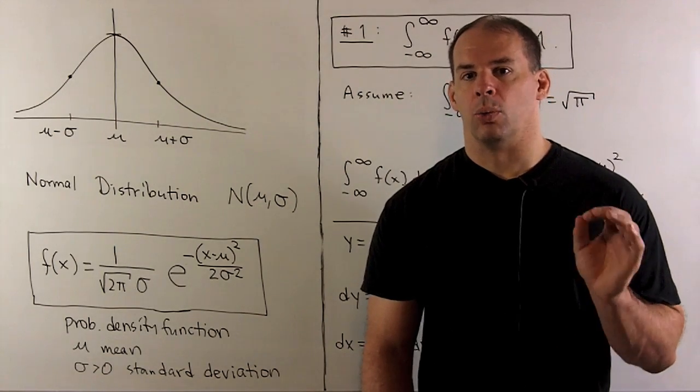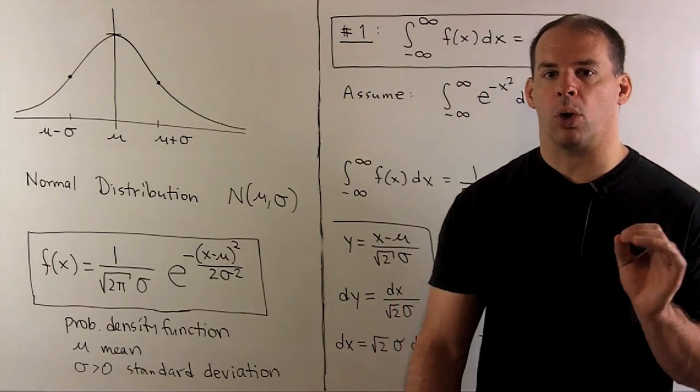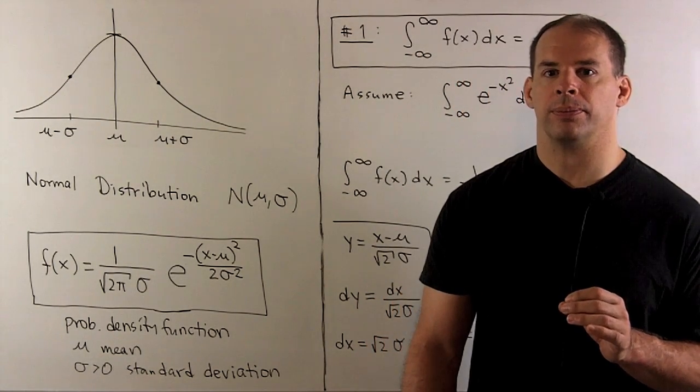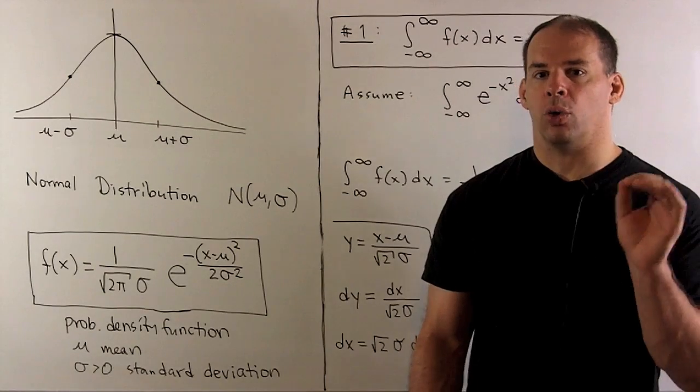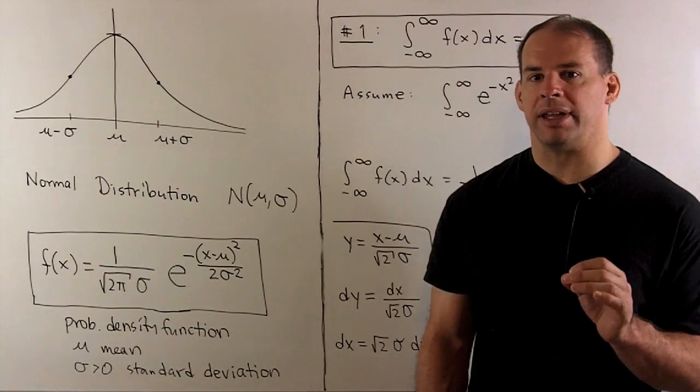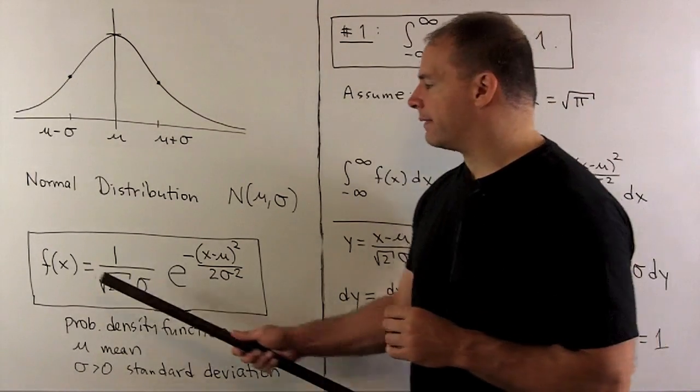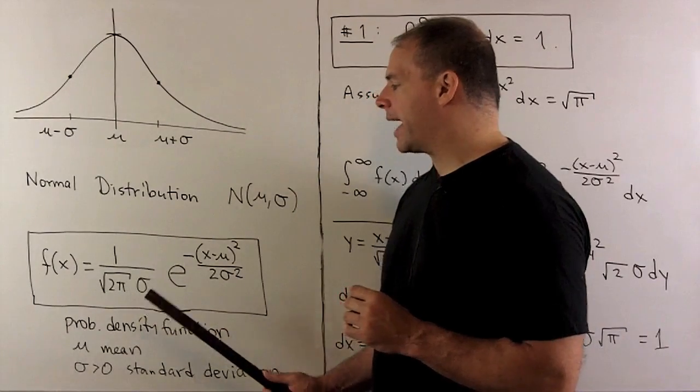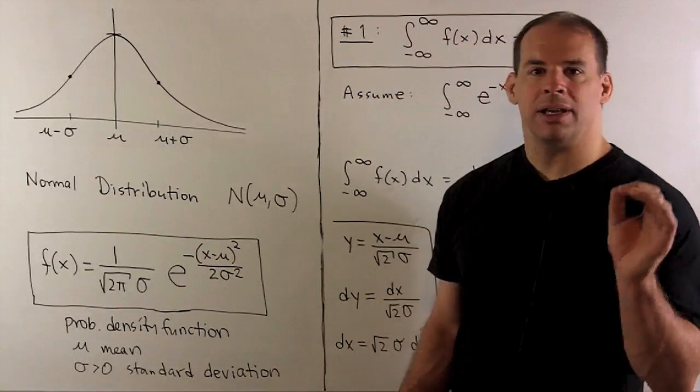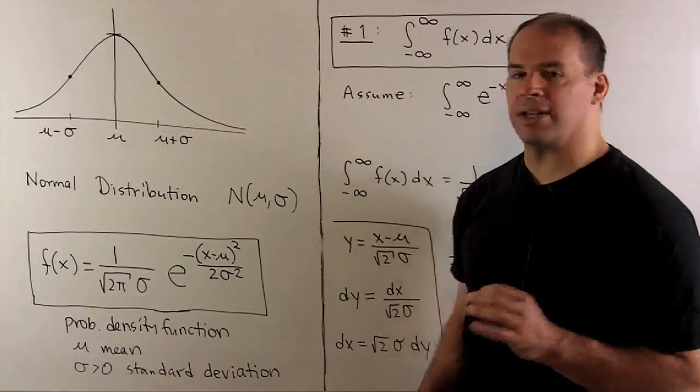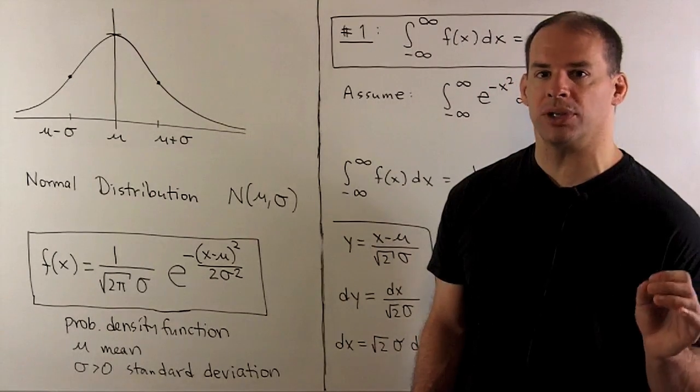For this segment, we want to verify basic properties of normal distributions. Recall, a normal distribution has probability density function of the form f(x) equal to 1 over square root of 2π times σ times the function e to the minus (x minus μ)² over 2σ².